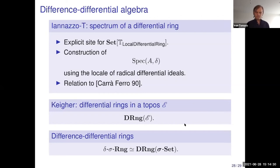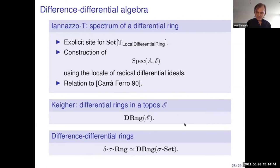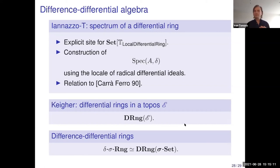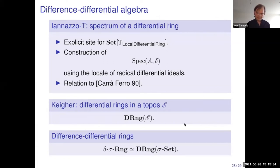Our construction of the differential spectrum differs from previous constructions of Keigher and Kovacic, which attempt to do it as a ringed space using the space of differential primes. Again, the same problem: you might not have any differential primes, so you may not be able to recover the original differential ring. In our context this is certainly rectified.